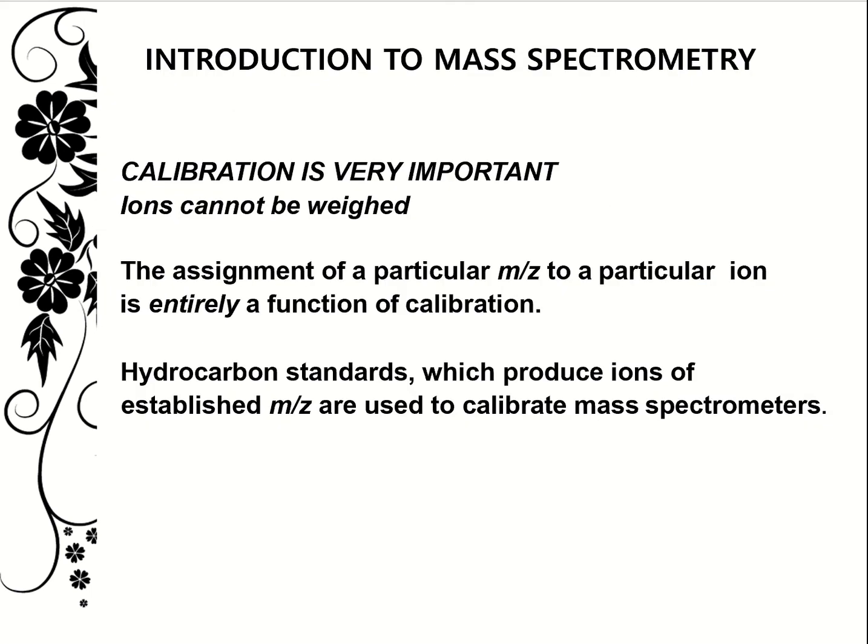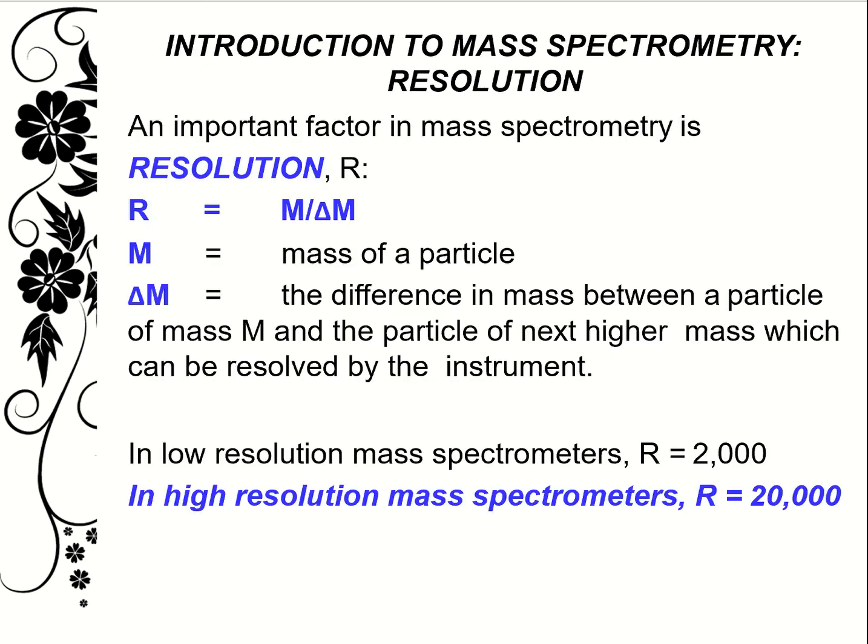Calibration is very important in mass spectrometry. Ions cannot be weighed, so the assignment of a particular mass-to-charge ratio to a particular ion is entirely a function of calibration. Hydrocarbon standards, which produce ions of established mass-to-charge, are used to calibrate mass spectrometers.